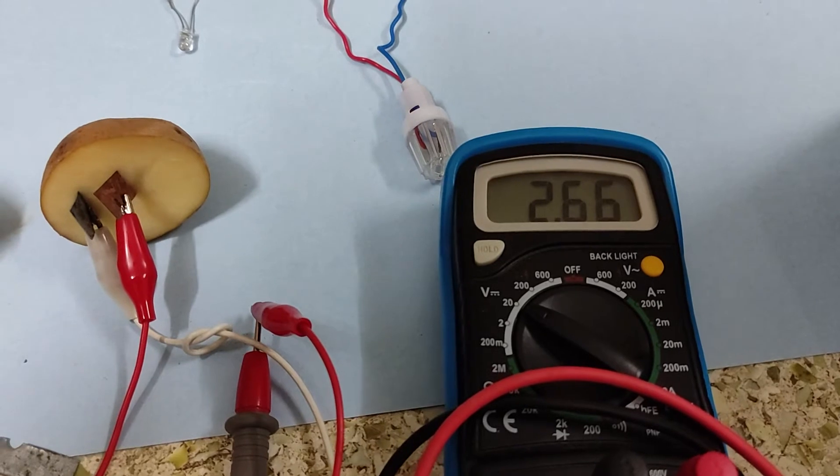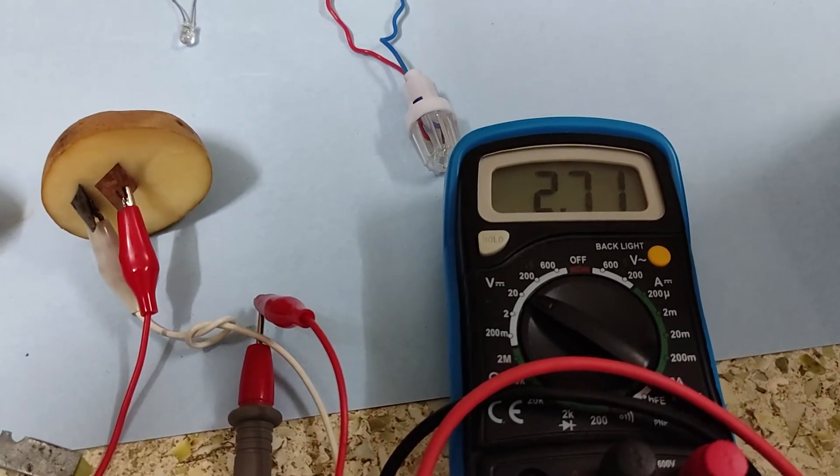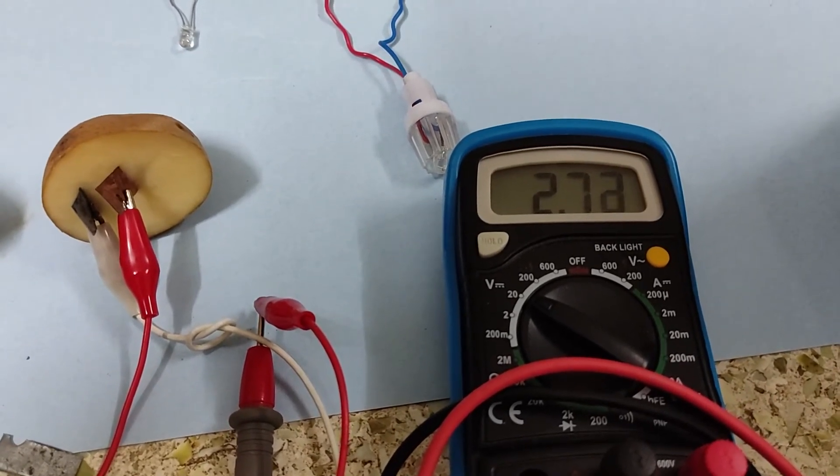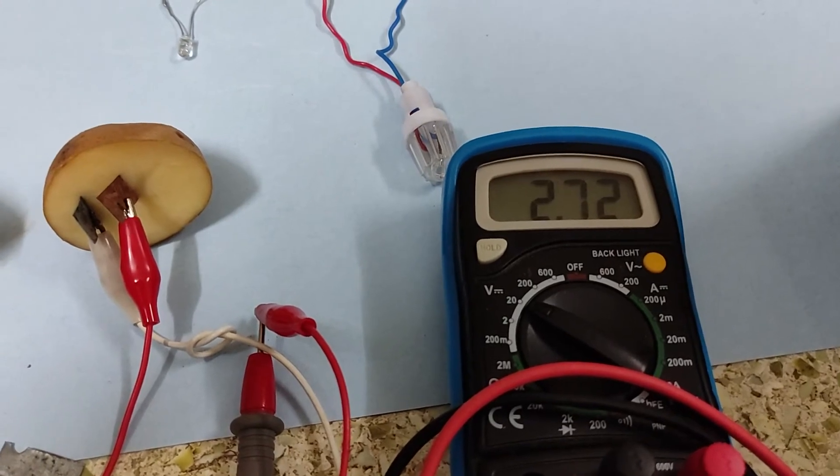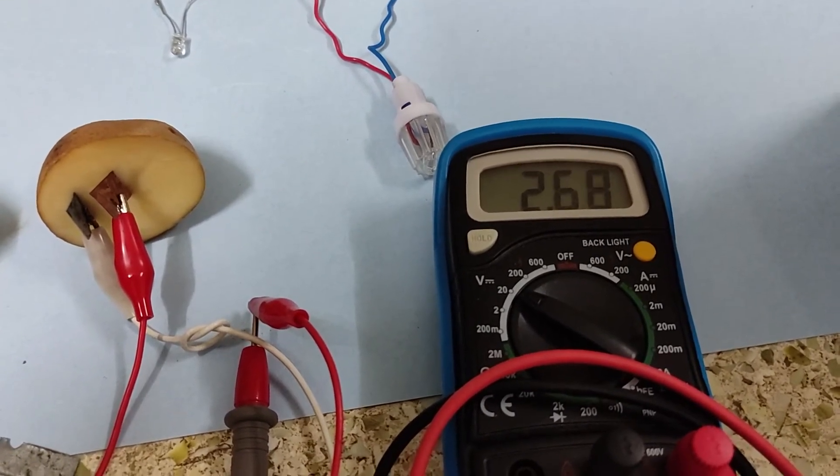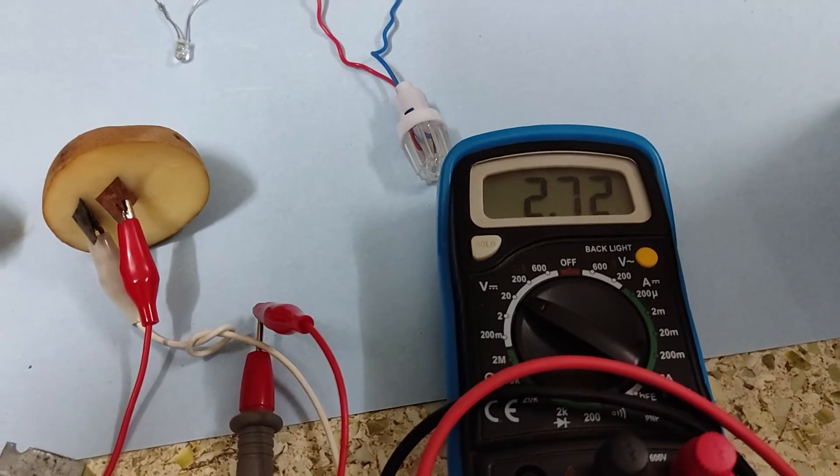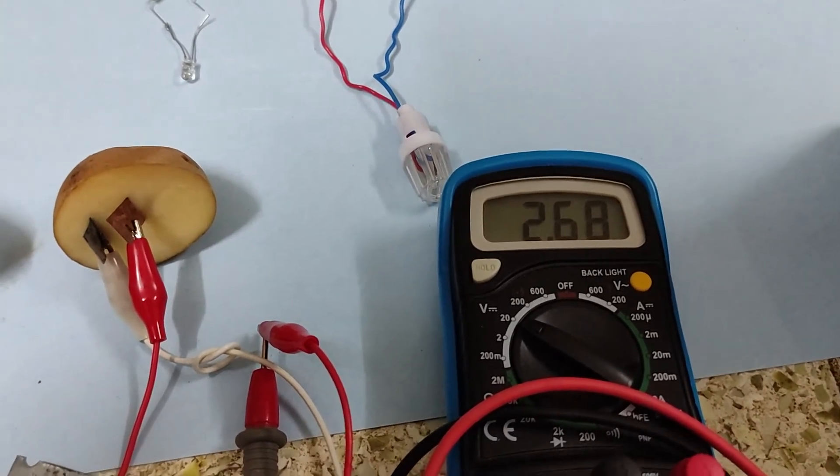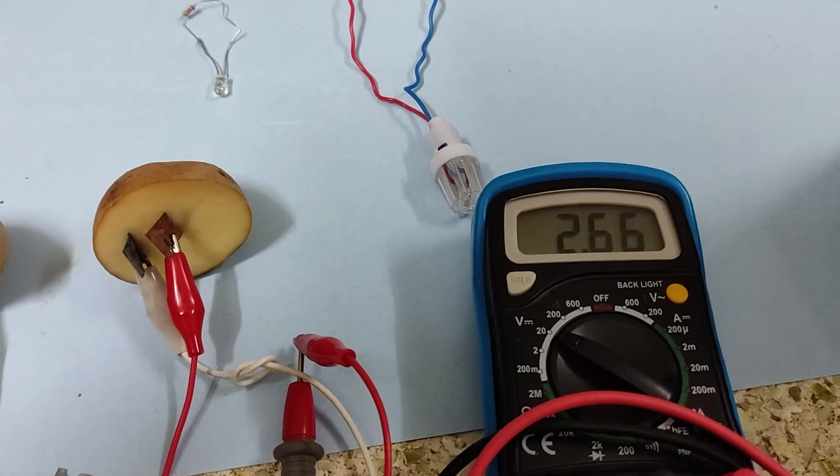That means what? For every one coulomb of positive charge, it gives work done. It does work about 2.6 to 2.7 joules on every positive coulomb of charge. That is the meaning of that. Now, we will check if the light is glowing or not.